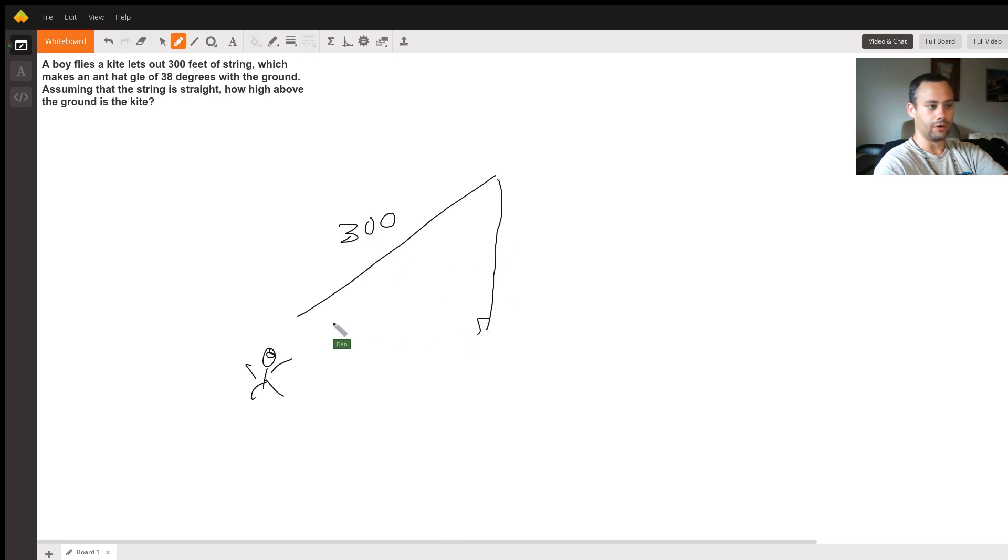This will form a right angle with the ground. Now we can use a trigonometric function. We want to know this unknown right here when we know this angle, 38 degrees, and this hypotenuse.